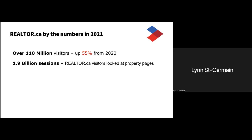There's definitely still a lot of searches happening on the website. 6.2 million leads came through the system last year, and some of these leads are coming through — most from realtor.ca directly, but of course from any of the DDF sites as well.